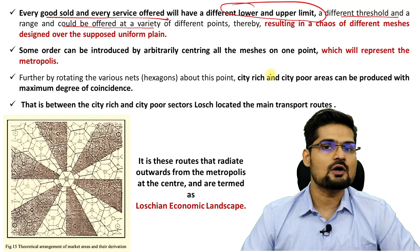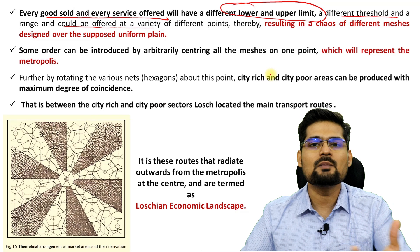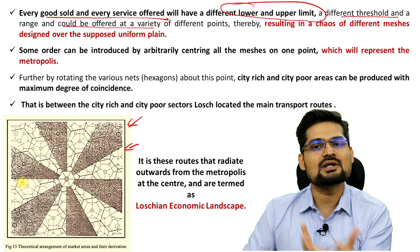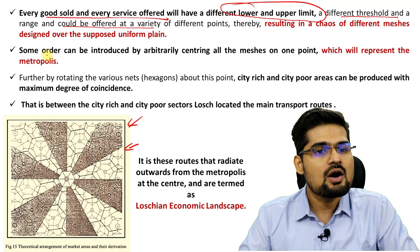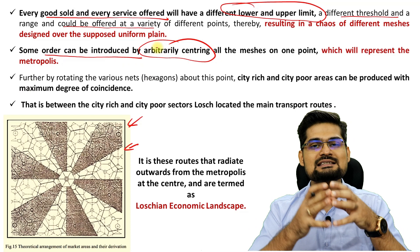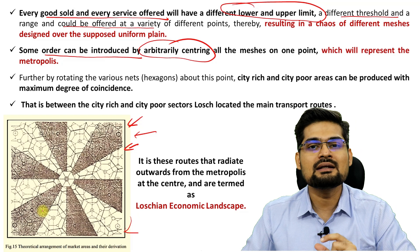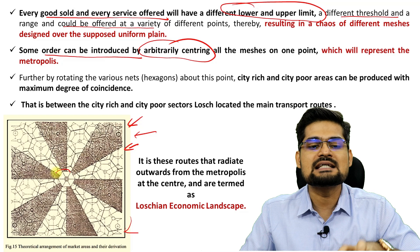This results in a very chaotic landscape — a very chaotic market system with different meshes. The Löschian model has a uniform plane but with a complex chaos of markets based on different threshold values. Some order can be introduced only by arbitrary centering — if you want to create order in this entire disordered market system, you arbitrarily place a central position point which is the bigger center, the metropolis.